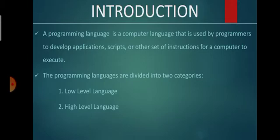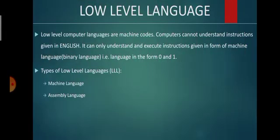Now the types of programming languages. There are two different types: first is low level language, and second is high level language. Low level computer languages are machine codes. Computers cannot understand instructions given in English; they can only understand and execute instructions given in the form of machine language, which is binary language — that is, language in the form of 0 and 1.